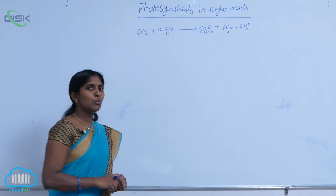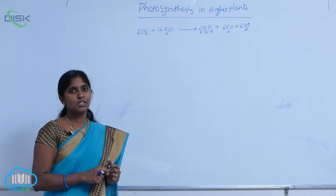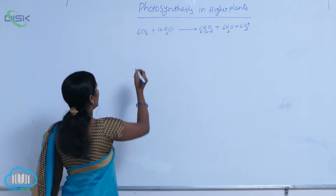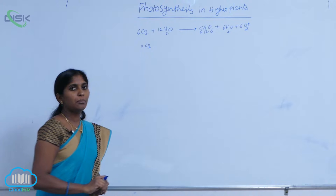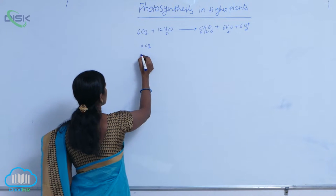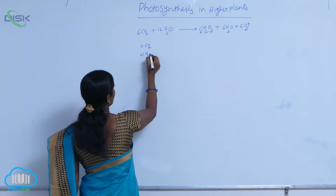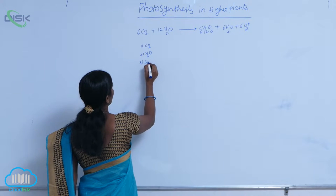Here the most required elements for photosynthesis are three. One is carbon dioxide, and next is water molecule, and then sunlight.